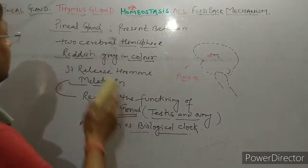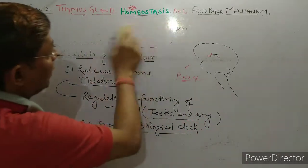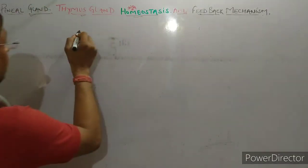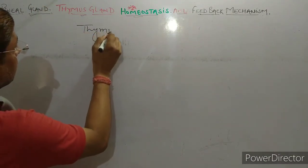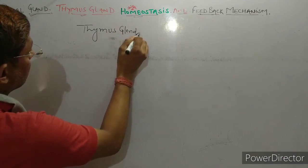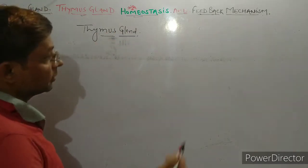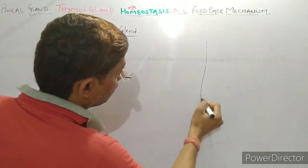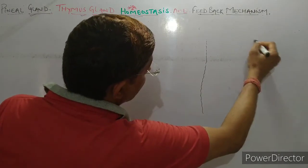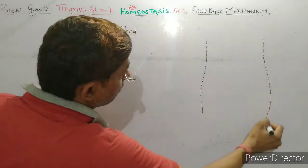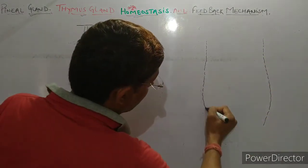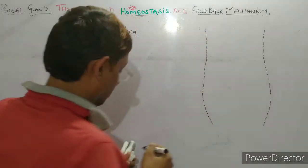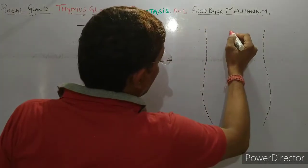Next gland is thymus gland. Thymus gland is located in the chest region. यह chest region में present होती है.